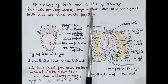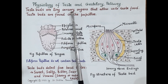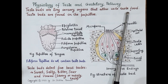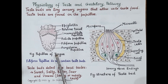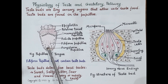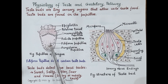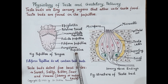We experience taste by the taste buds. Taste buds are tiny sensory organs that allow us to taste food. Taste buds are located inside tiny bumps covering our tongue. These bumps are known as papillae. There are four types of papillae. Papillae that contain taste buds are circumvallate papillae, foliate papillae, and fungiform papillae.